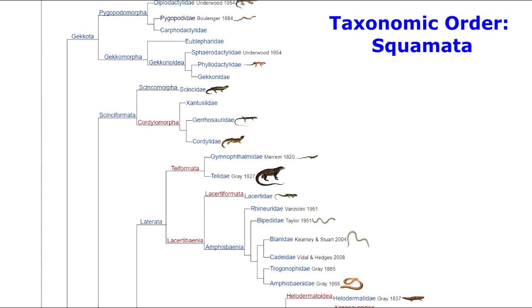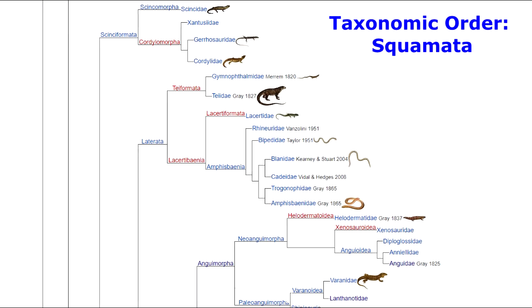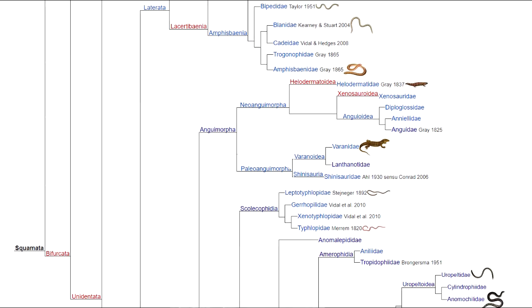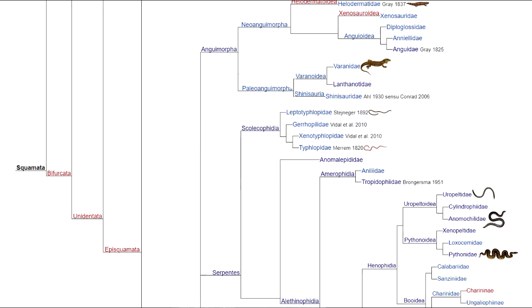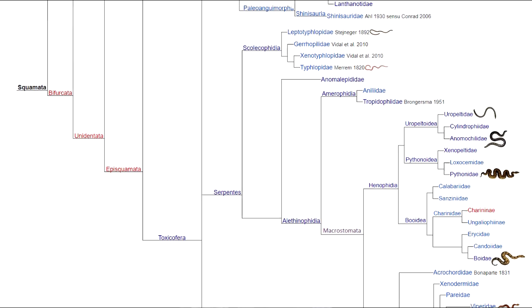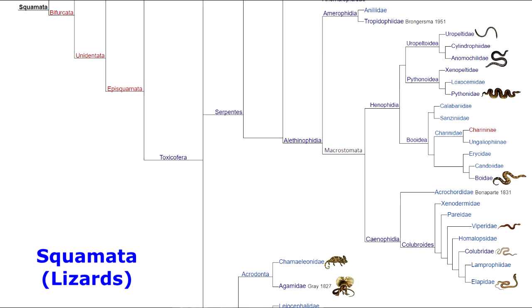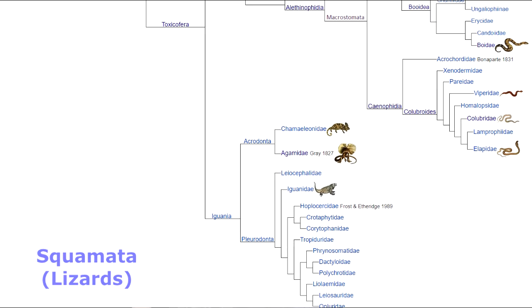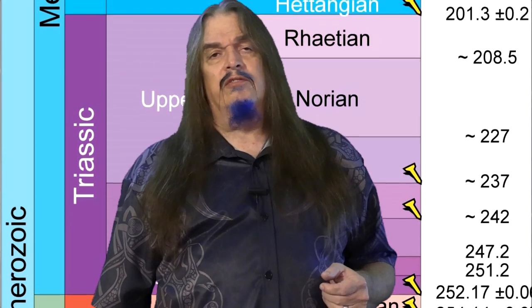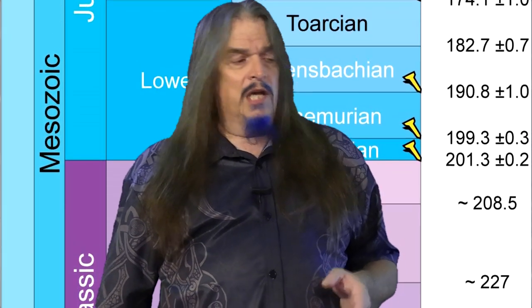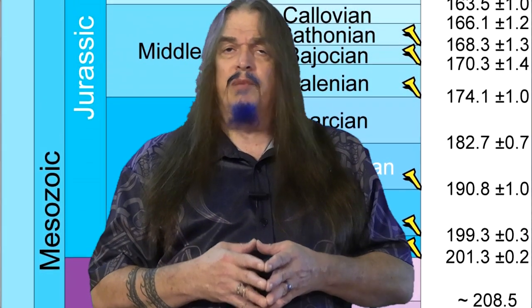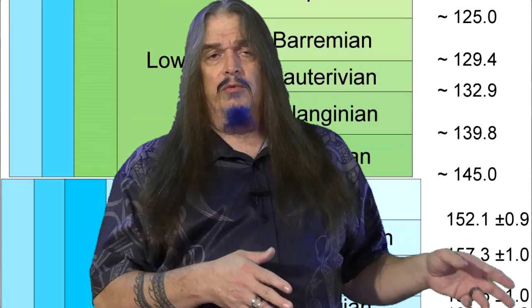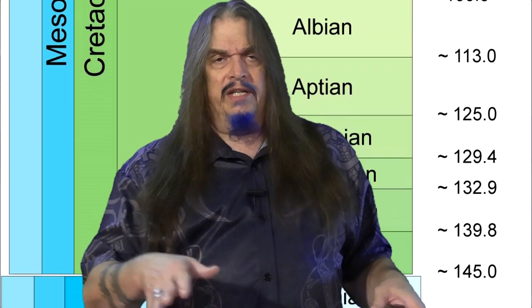Snakes are squamates. The order Squamata includes lizards and snakes, as well as amphisbaenians, also known as worm lizards — but a worm lizard is still a lizard. The evolutionary law of monophyly means that you can't grow out of your ancestry, so if snakes are derived from lizards, then snakes are lizards too — just a highly specialized variety of them. The fossil record shows that we've had lizards on this planet since at least the Middle Triassic. Evolution is a theory of biodiversity, and lizards have since evolved into 5,000 or 6,000 species, and that's just counting the ones still alive and not yet including snakes.